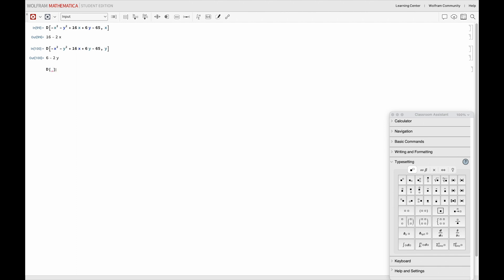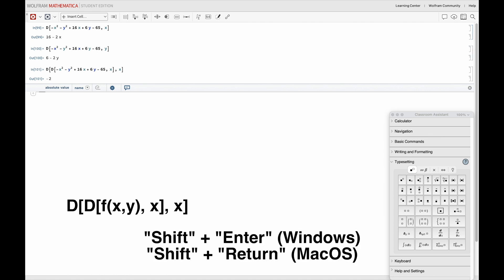Then, to find the second order partial derivatives, we use the codes we wrote above and repeat the process. With respect to x two times in a row, we type again D open and close square brackets, within the same square brackets, write the code for the first order partial derivative with respect to x, add a comma and x, and hit shift plus enter to run the code.